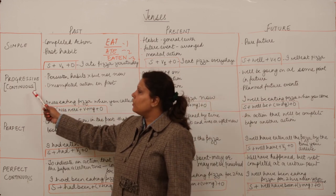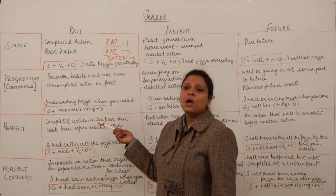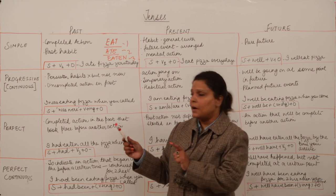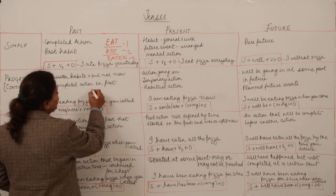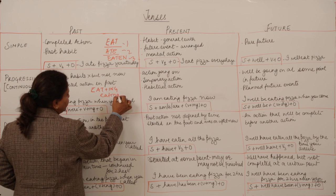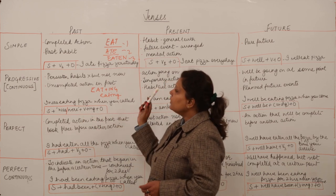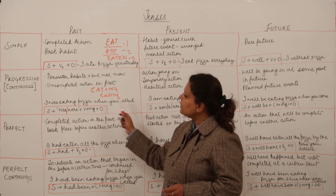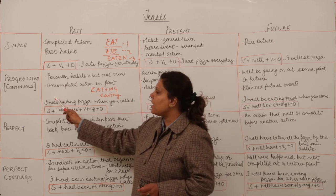Then we come to the progressive continuous tense. The past progressive continuous tense is used to express persistent habits which you are not carrying on now — for example, 'she was eating her nails all day but now she has stopped.' The form is: subject + was/were + verb form with -ing. It is also used for uncompleted actions in the past — 'I was eating pizza when you called' — when a later action happened but the earlier action was not yet complete.